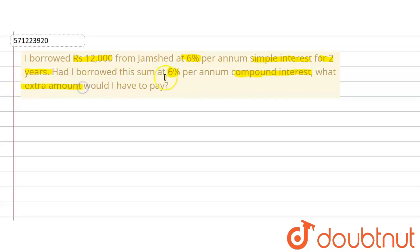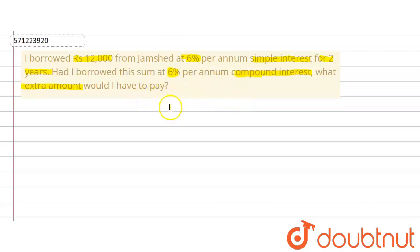In this question we are supposed to find out the simple interest on rupees 12,000 at the rate of 6% for two years, then find the compound interest for the same rate and same time period on the same principal, and then find out the difference between compound interest and simple interest — because compound interest is always greater than simple interest for the same conditions.